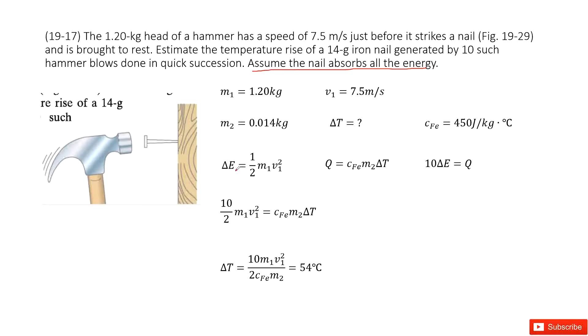So now we can first write the initial energy, ΔE, right? It is ½ M1 V1 squared. Because the final energy is 0, the final energy for this hammer stops, 0.